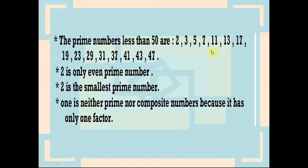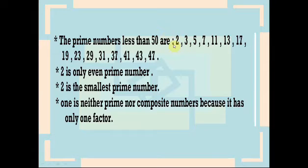From these numbers, we note that 2 is the only even prime number because all these numbers are odd except 2. Also, 2 is the smallest prime number.